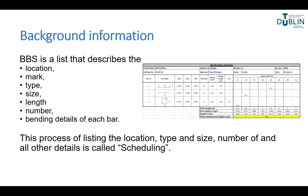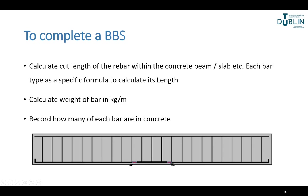Schedules should have a simple consecutive reference number and should be cross-referenced. To complete a bar bending schedule there are a few quick steps to summarize: you have to calculate the cut length of the bar within the beam, and each bar type has a specific formula to calculate based on its shape code.